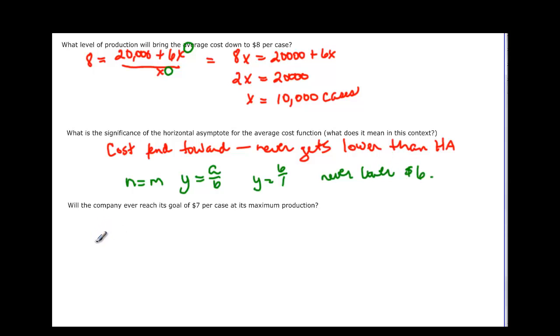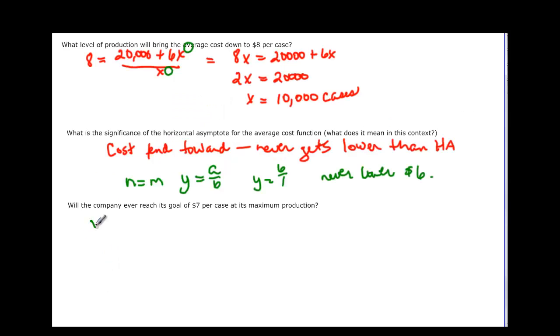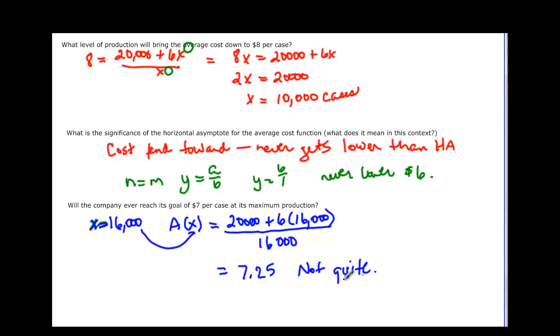Finally, will the company ever reach its goal of $7 per case as its maximum in production? Well, the maximum production, if we go back to the slide before, they told us their maximum production was 16,000 cases. So that's our x, x equals 16,000. Going into the cost function, if x is 16,000, we have 20,000 plus 6 times 16,000, all over 16,000. If you compute that, you're going to end up with 7.25. So did they reach their goal? Not quite. It's 7.25, not 7.0.